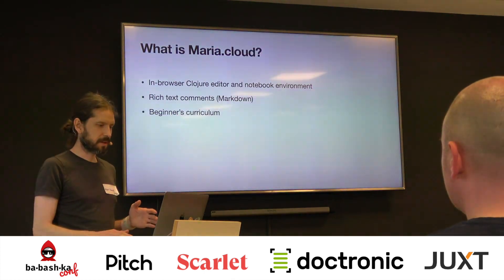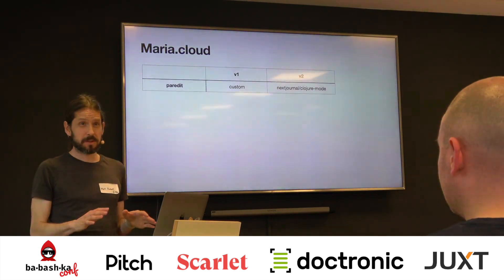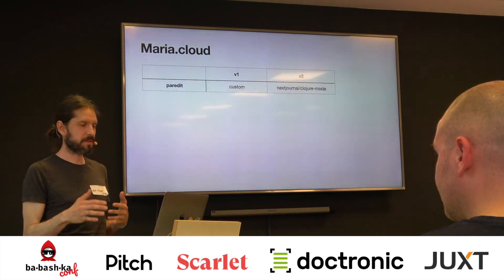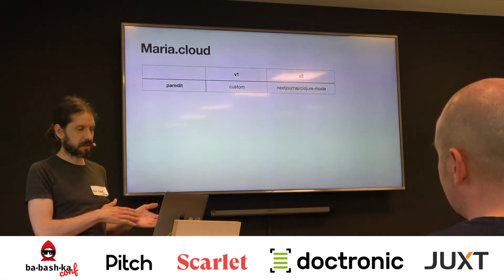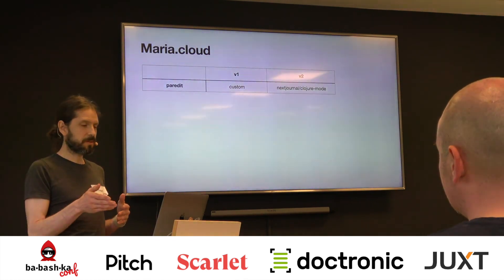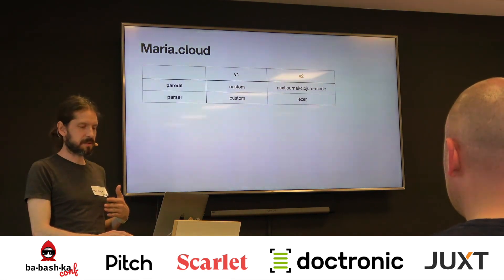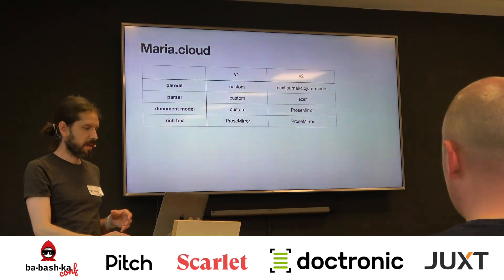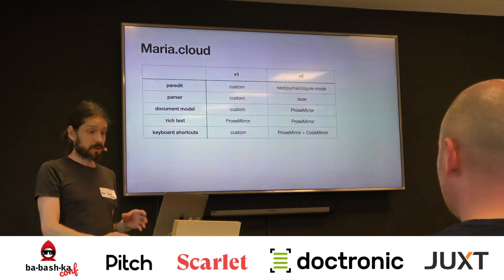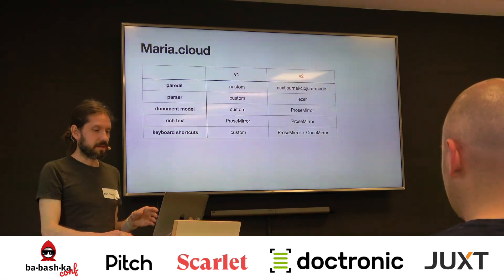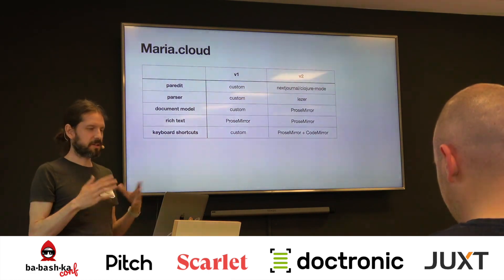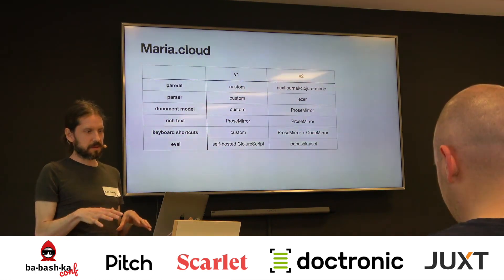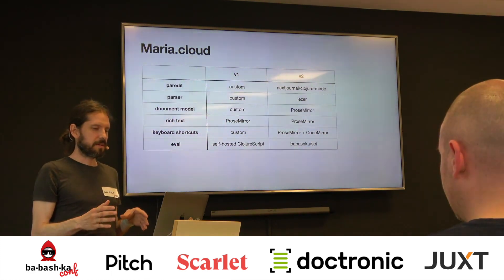Last winter, I got some Clojurist Together funding to work on version 2. The first version was built right after the ClojureScript self-hosted compiler came out, and it was one of the first projects to make heavy use of that. There was a lot of stuff that didn't exist yet. For Paredit, I did a custom implementation. Version 2 uses NextJournal Clojure mode. For the parser, I had a custom parser, and now we use Lezer from CodeMirror 6. For the document model, I had a custom thing, and now we use ProseMirror to control the whole document from the top down. Rich text blocks also use ProseMirror. Keyboard shortcuts, a big source of pain in the current version, are delegated to ProseMirror and CodeMirror in the new version, so it should work better on international keyboards. And we used Squint for the eval in the new version, which is much simpler to implement and lighter weight.